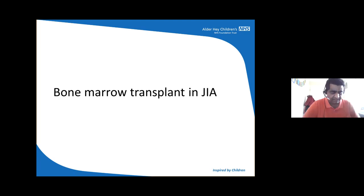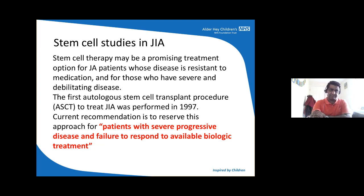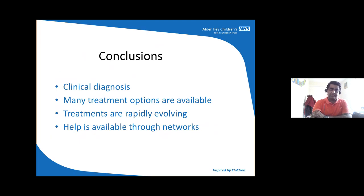Like many other inflammatory conditions, bone marrow transplant has a definite role in treating inflammatory arthritis, especially for patients who do not respond to treatments. The first stem cell transplant to treat a JIA patient was performed in 1997. Currently we have relatively strict protocols for consideration of bone marrow transplant. Patients with very severe progressive disease who fail to respond to at least two or three available biologics can then be assessed for bone marrow transplant. In the UK, we have three centers where patients can be assessed for suitability and can receive bone marrow transplant.